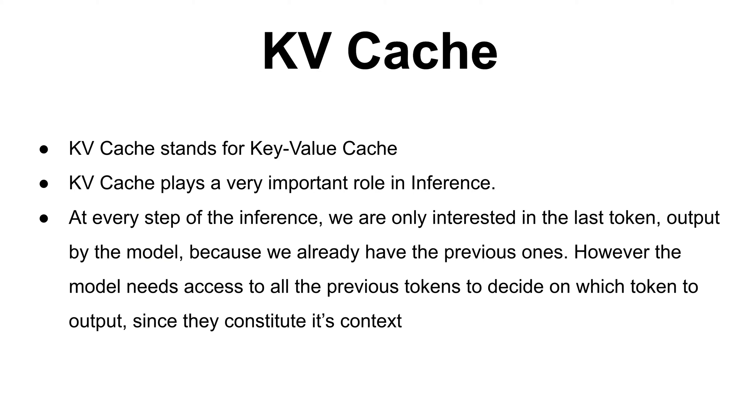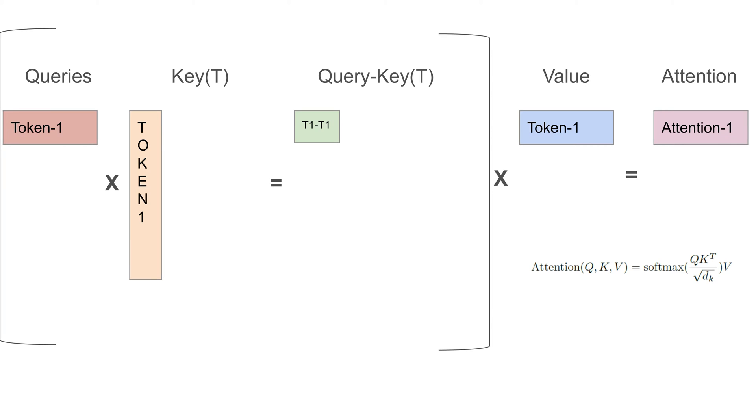Let's start with KV cache. KV cache stands for key-value cache and it's a very important thing in the whole inference part of large language models. At every step of inference, what are we interested in? Only the last token which has been output by the model. But the model needs access to all the previous tokens to decide which token to output since they constitute its context.